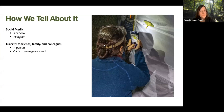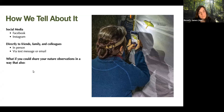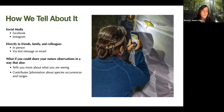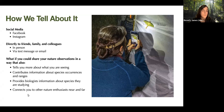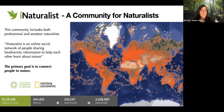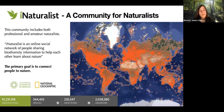We often tell about nature through social media like Facebook or Instagram, or we tell friends, family, and colleagues in person, via text or email. But what if you could share your nature observations in a way that tells you more about what you're seeing, contributes information about species occurrences and ranges, provides biologists information about species they're studying, connects you to other nature enthusiasts near and far, and organizes your observations on a map and a life list? This is where iNaturalist comes in. iNaturalist calls itself a community for naturalists — both professional and amateur — and their primary goal is to connect people to nature. All the data is just a byproduct of those connections.